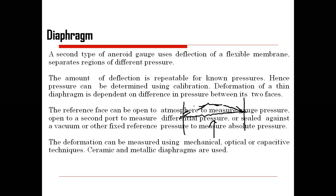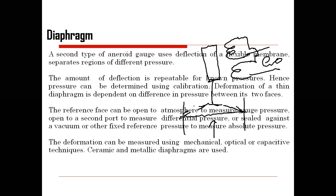Here, we connect the core of the LVDT, which acts as a secondary transducer. The resultant output is generated from this setup. If the pressure applied is P1, that pressure will try to move the core in the backward direction to generate the electrical output.